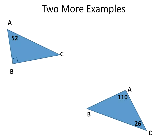Two more examples will show us the same basic ideas. This one here having that square in the corner means that that one's 90, so we can go ahead and label that. I would take 180 minus 90 minus 52 and I would get the final angle measurement of 38 degrees. This one here, I would take 180 minus 110 minus 26 and that would tell me that my remaining angle is 44 degrees.